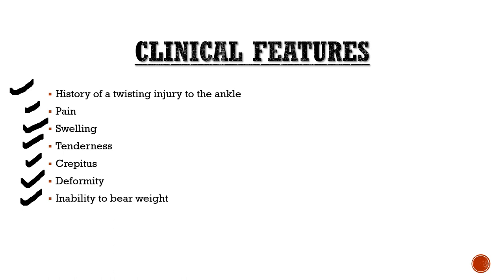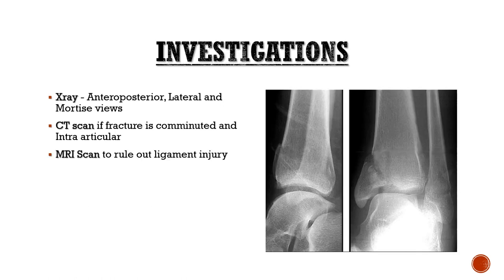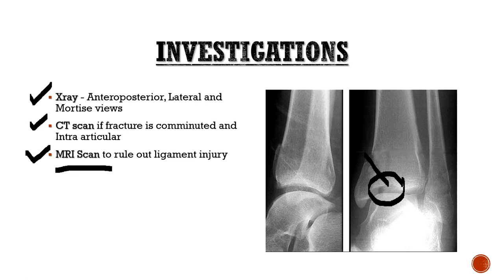Investigations are mainly three types: X-ray, CT scan, and MRI scan. In most patients, X-ray gives a proper diagnosis. CT scan is required only if the fracture is intra-articular. MRI scan is used to rule out ligament injury. X-ray views include anteroposterior, lateral, and the special mortise view.